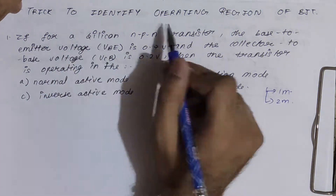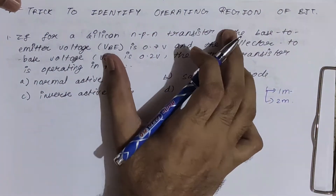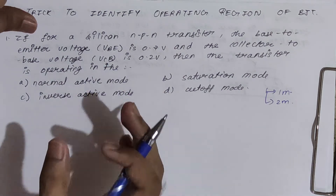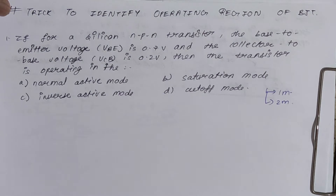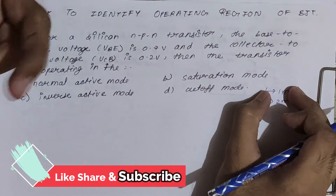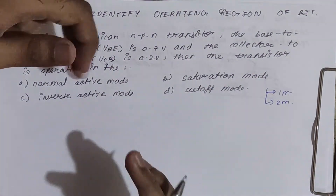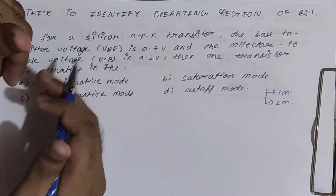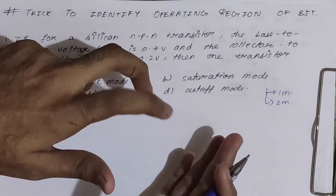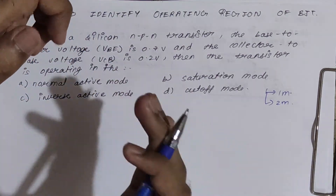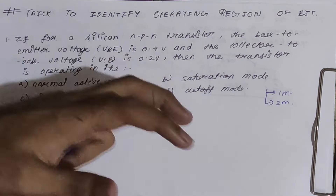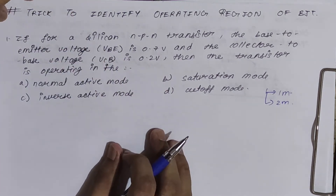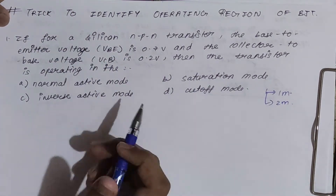Hello friends, today we are going to see the trick to identify the operating region of a BJT transistor. We will discuss two types of problems: one-mark questions, where all parameters are given and you identify the operating region, and two-mark questions, where you are given a circuit diagram and must first extract the parameters, then identify the region of operation.